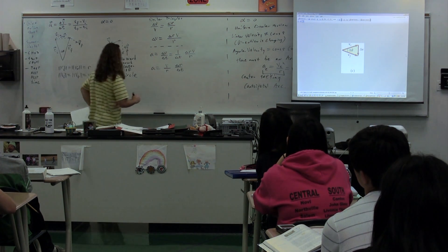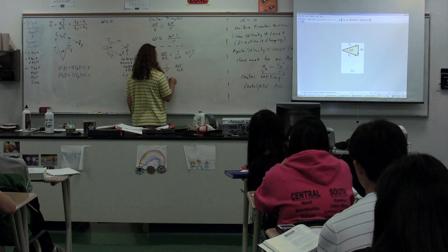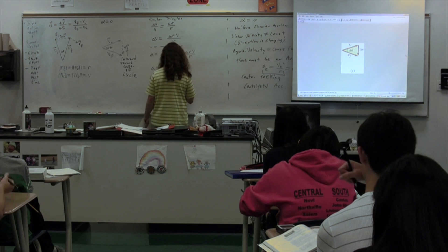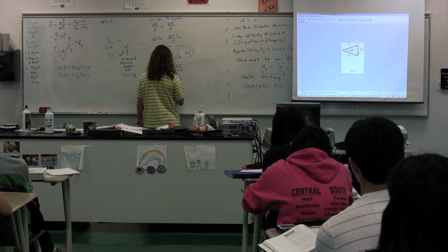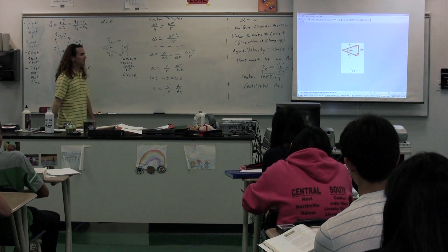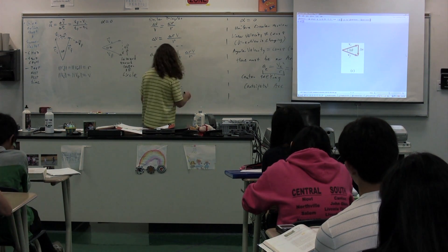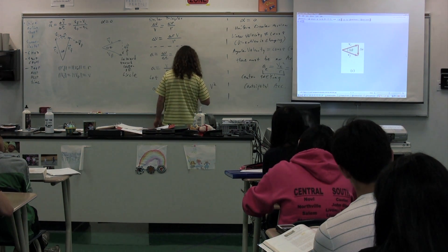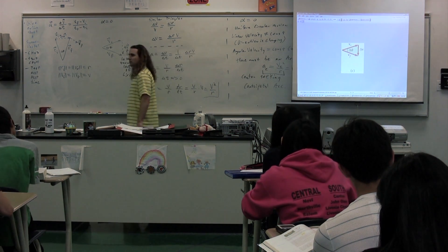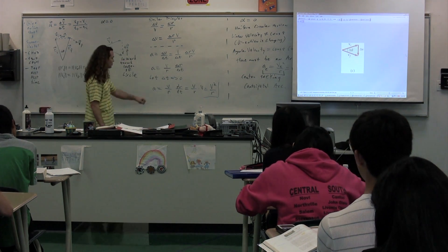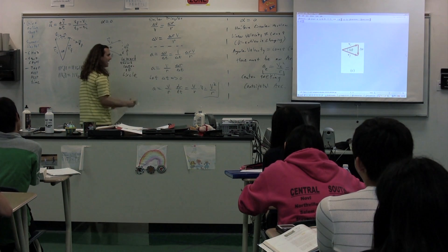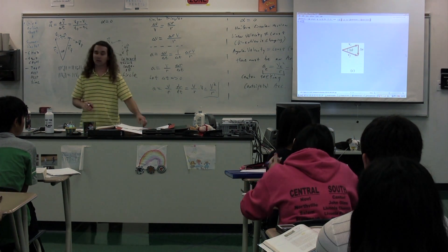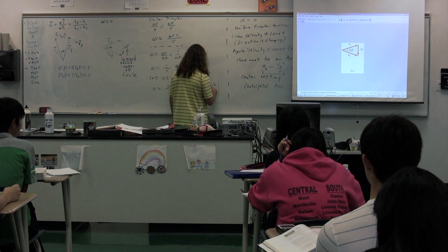So, let's let delta T approach zero. As delta T gets closer and closer to zero, we can replace this with acceleration equals velocity over R times dr/dt. And what is dr/dt? [Students: Instantaneous velocity.] So this is velocity divided by R multiplied by velocity — or velocity squared divided by the radius. In other words, the acceleration when moving in a circle, in uniform circular motion, is directed inward and has a magnitude of velocity squared divided by the radius — that velocity being the velocity along the tangent to the circle. Hence, tangential velocity squared divided by the radius.